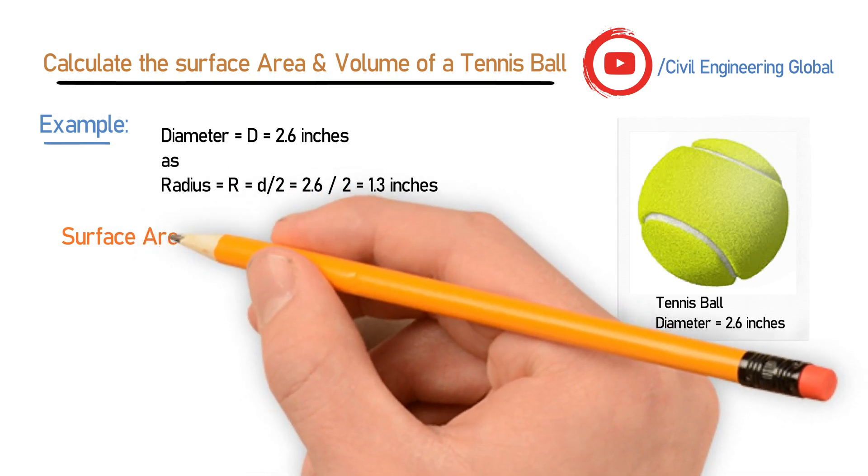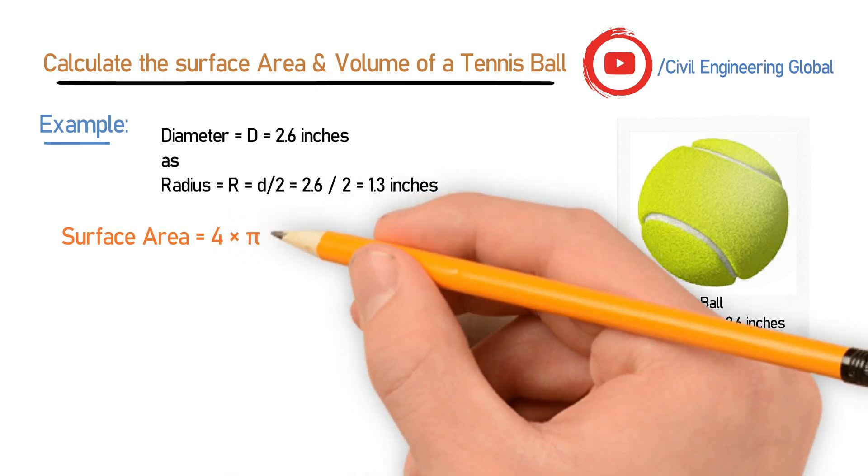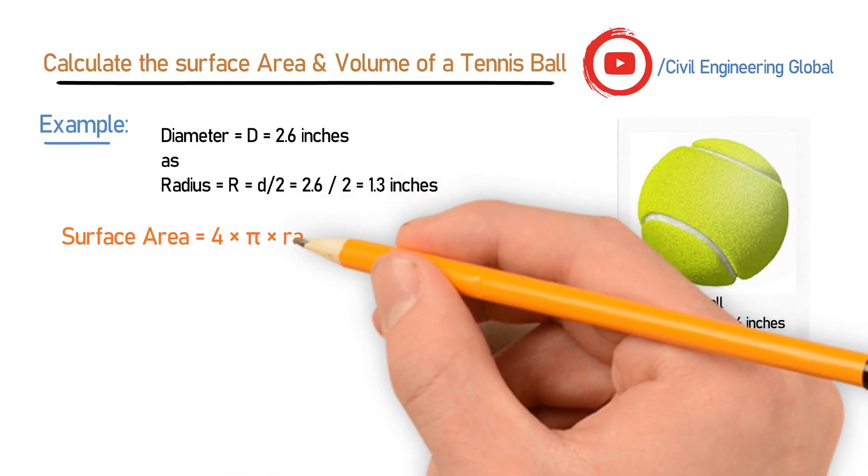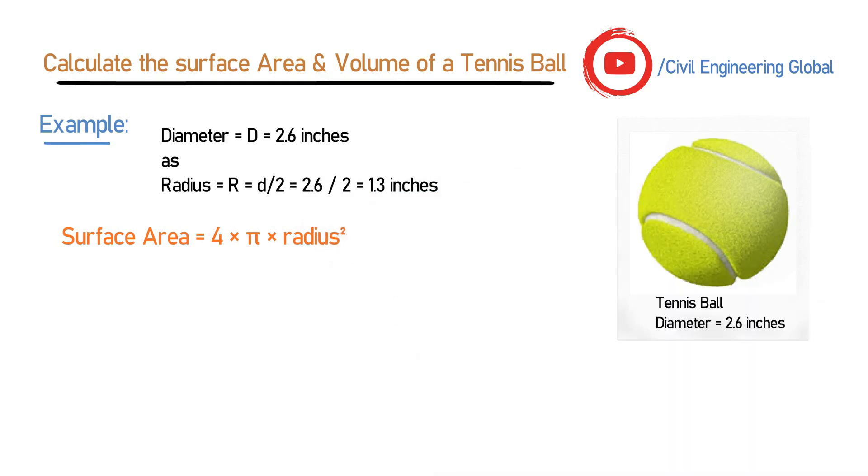As we know, the tennis ball surface is similar to a sphere, so we will take the formula for the sphere. The formula for the surface area of a sphere is equal to 4 × π × radius².